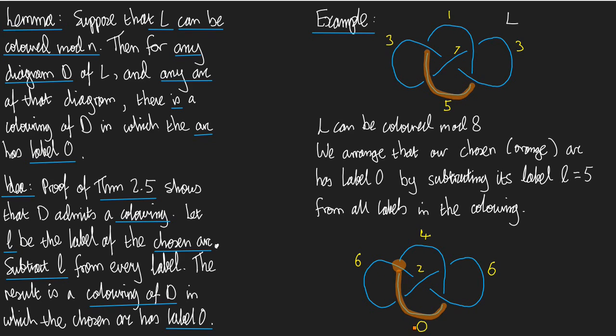The colouring equation tells us that we need 0 plus 4 to be congruent to 2 times 6. Is 12 congruent to 4 mod 8? Yes, it is. So, this is indeed a colouring.